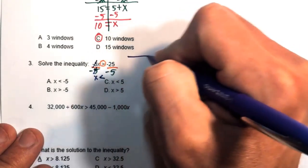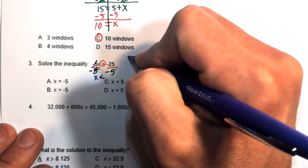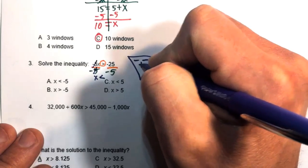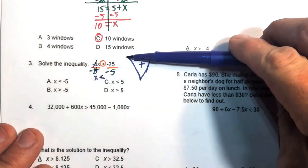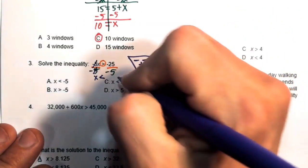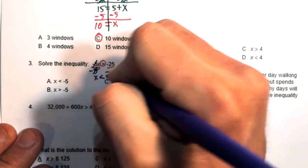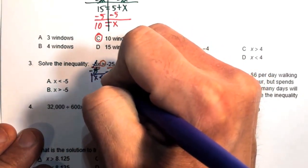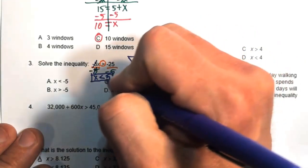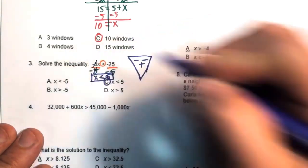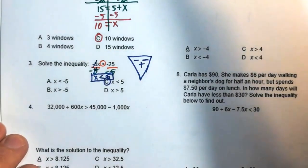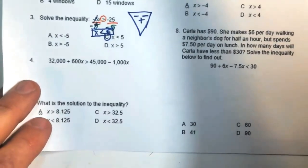We do need to flip the inequality since we divided by a negative. Negative divided by negative is positive, and 25 divided by 5 is 5. Therefore x is less than 5. That's answer C.